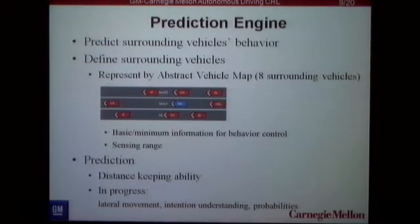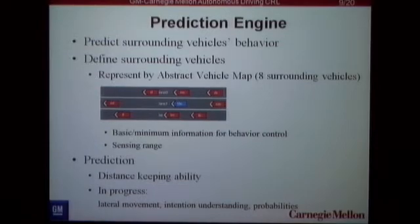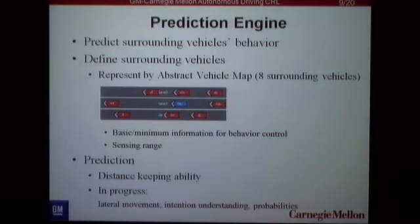For the prediction engine, we want to predict surrounding vehicles' behavior. We represent them using an abstract vehicle map which includes eight surrounding vehicles around you, providing the minimum information for the autonomous vehicle to make decisions and fitting our sensing range. For prediction, we assume all vehicles have a desired velocity and basic distance-keeping ability. This is a basic prediction engine; in progress, we want to consider lateral movements of surrounding vehicles based on understanding their intention, and introduce probability as well.